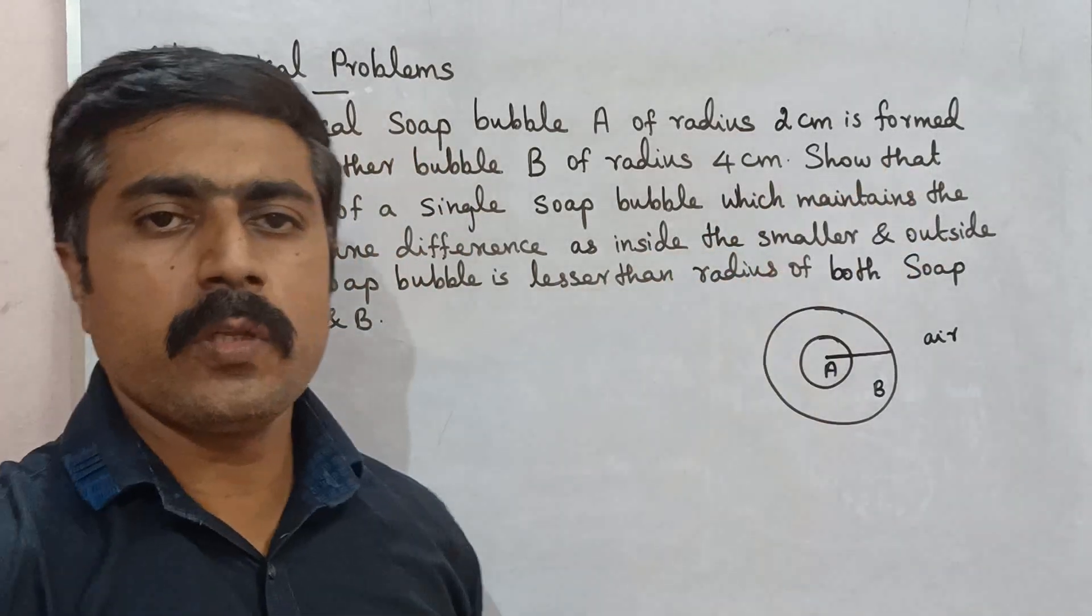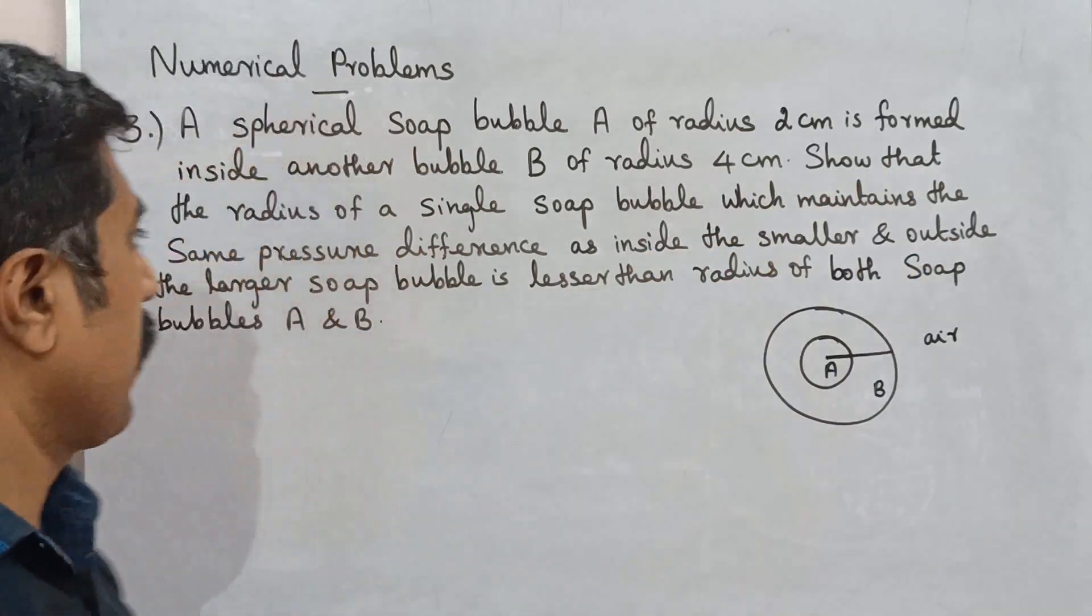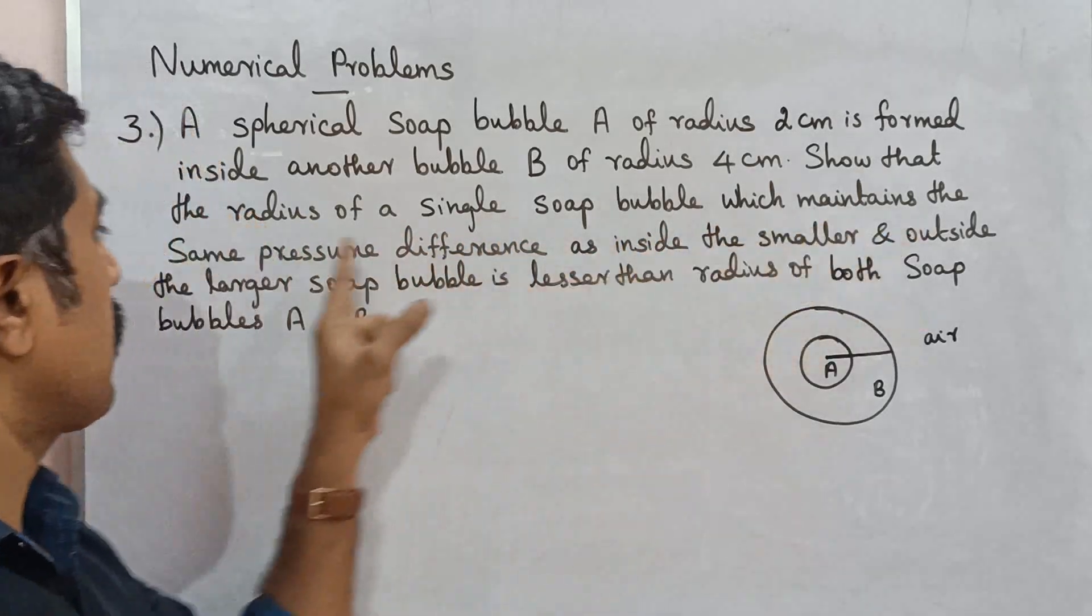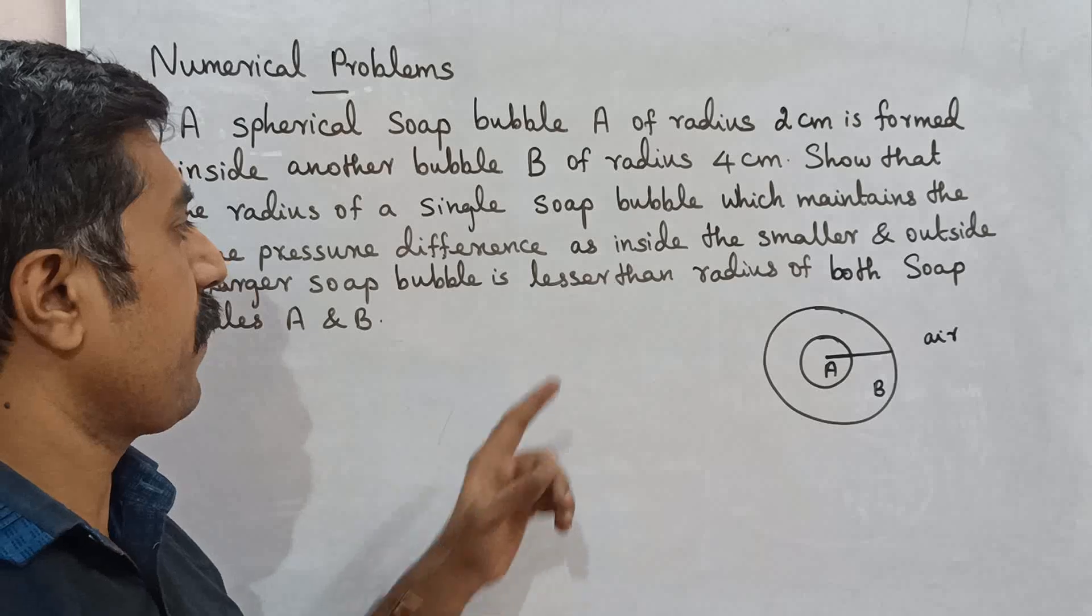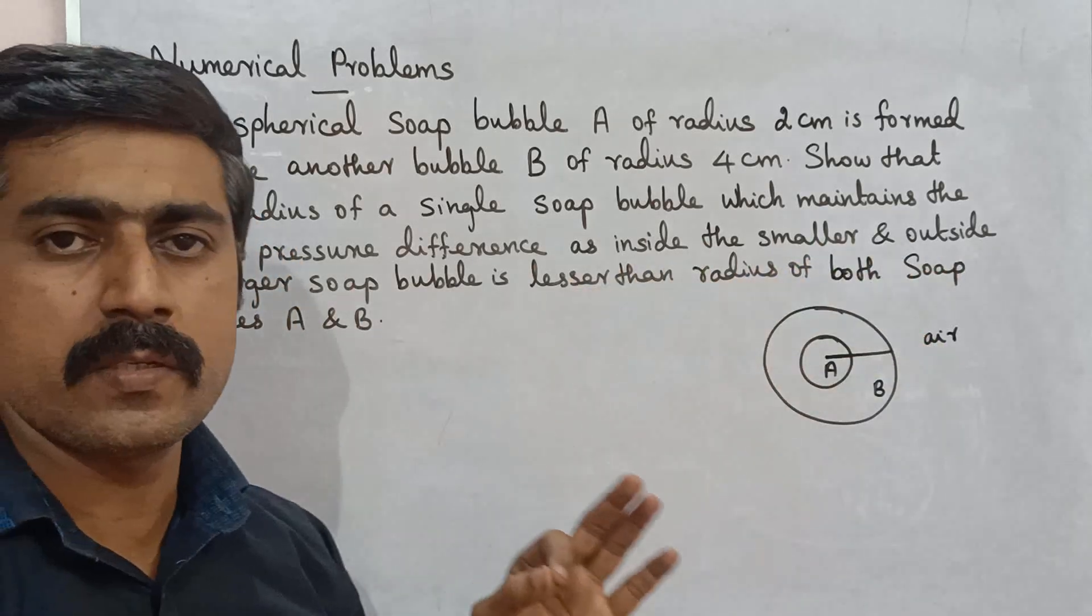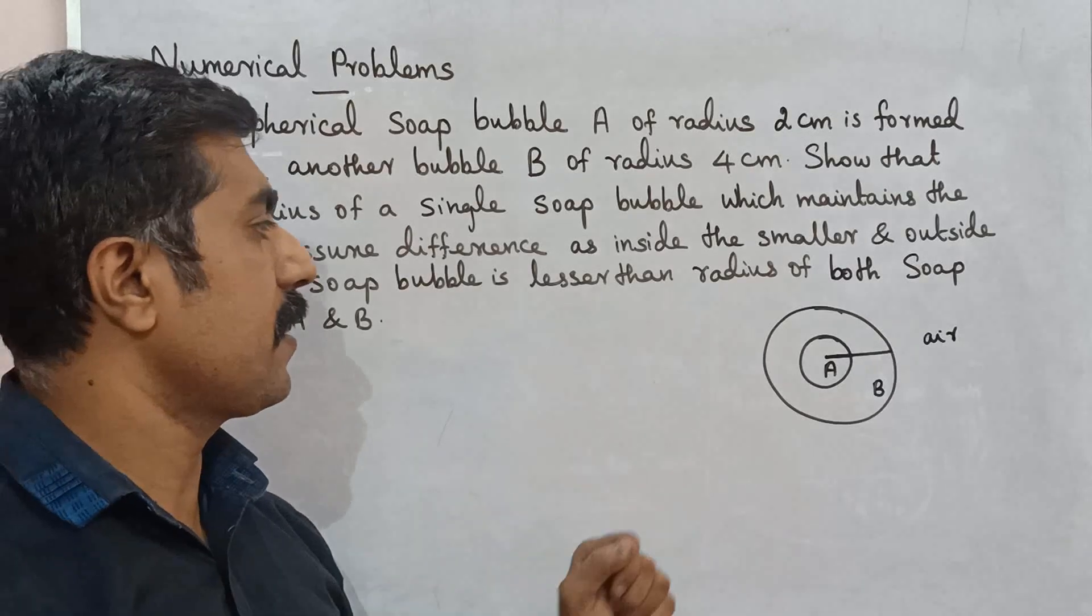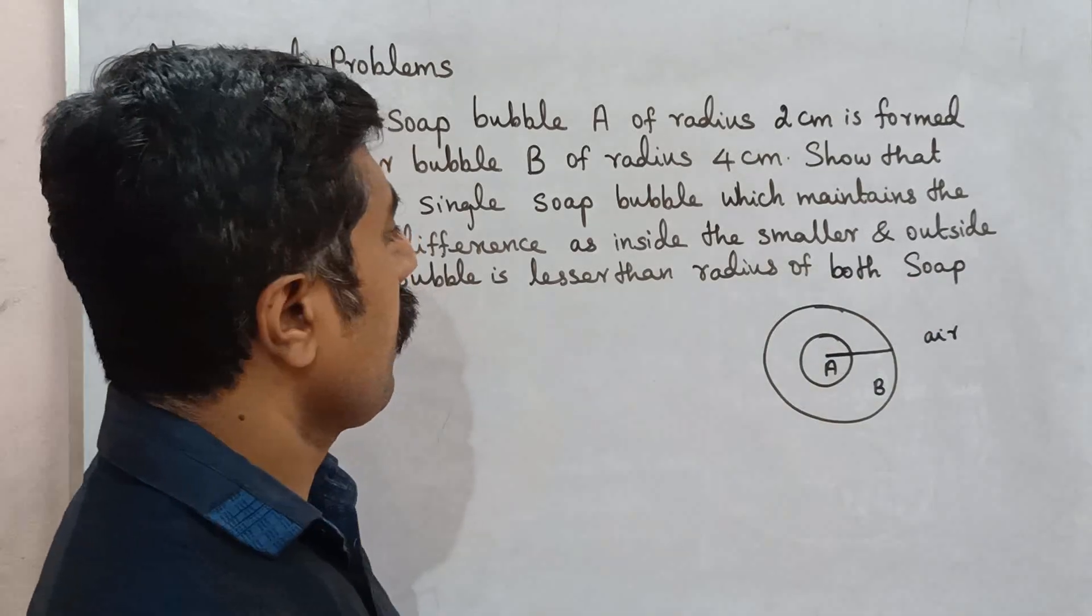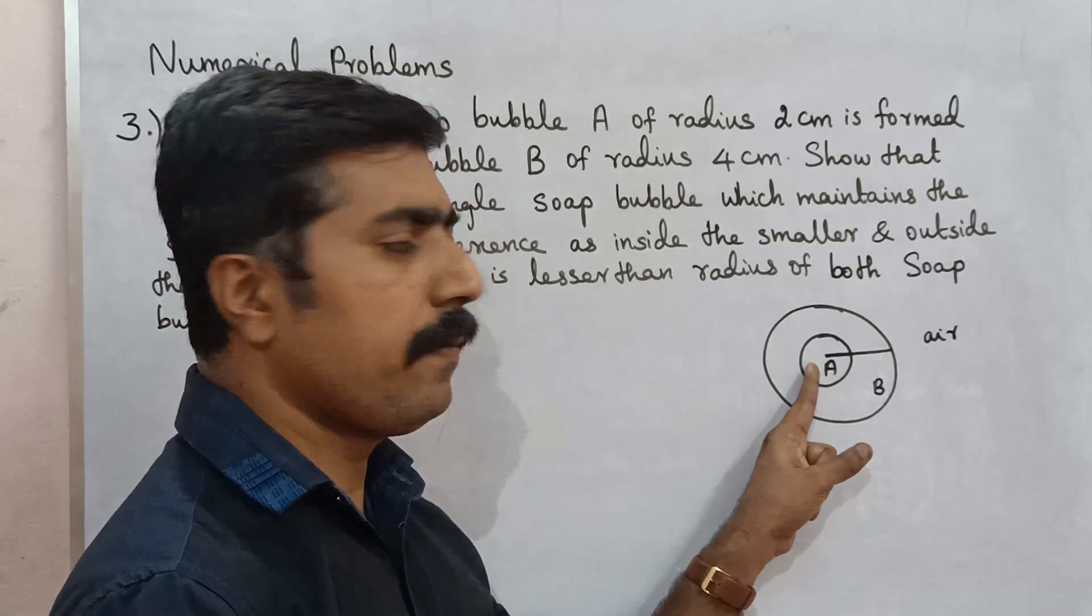Show that, prove that the radius of a single soap bubble which maintains the same pressure difference as inside the smaller and outside the larger soap bubble is lesser than the radius of both soap bubbles A and B.